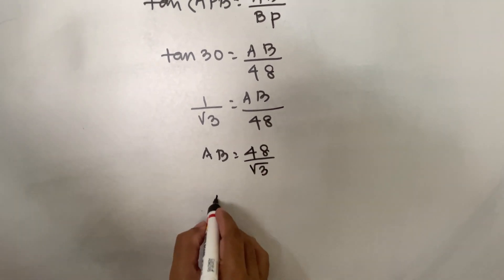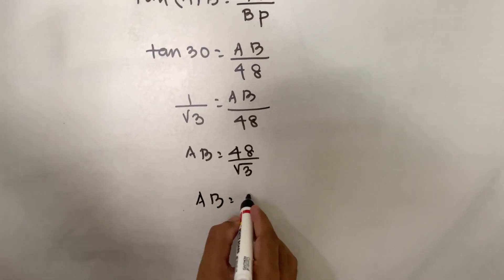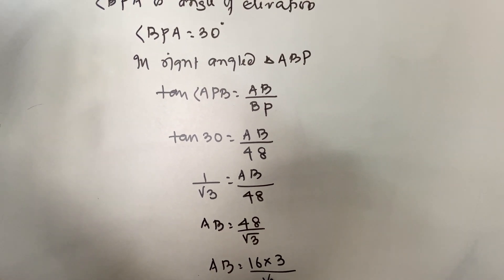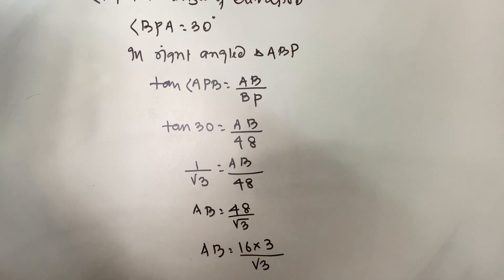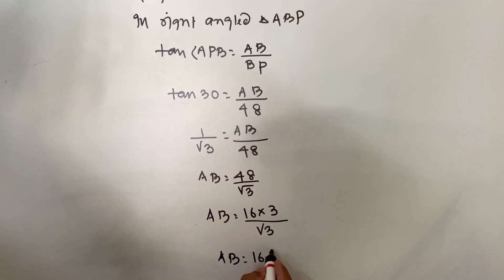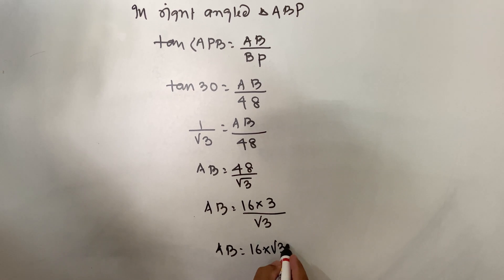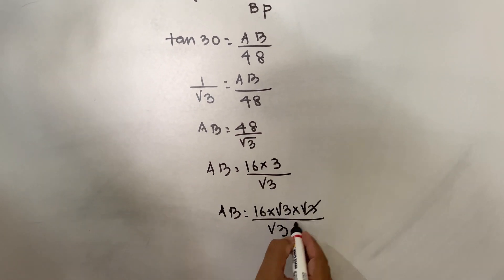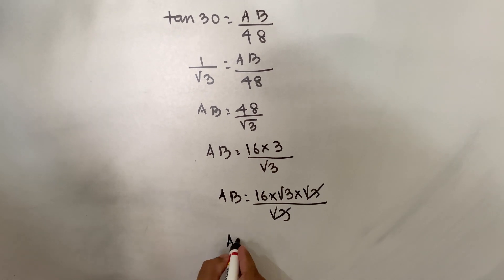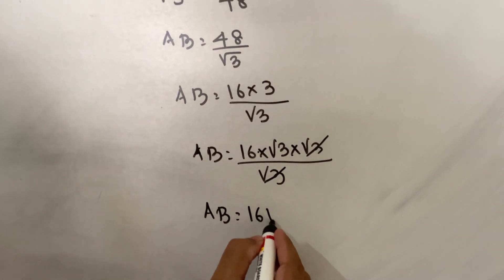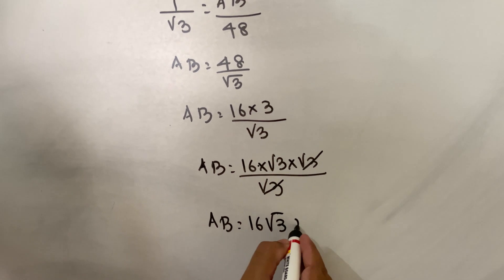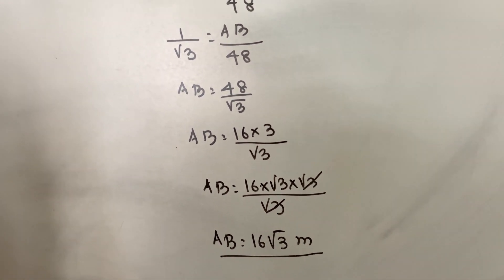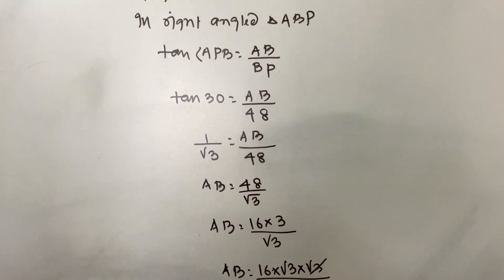AB = 48 upon root 3. Simplify: 48 upon root 3 = 16 root 3 into root 3 upon root 3. Root 3 cancels and you get AB = 16 root 3 meters. Therefore, the height of the building is 16 root 3 meters.